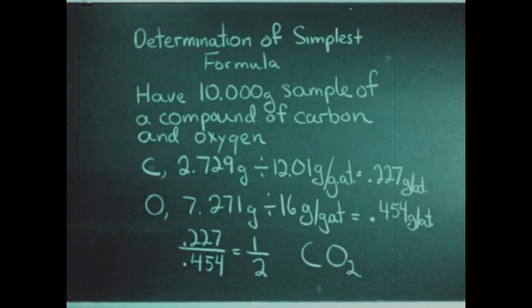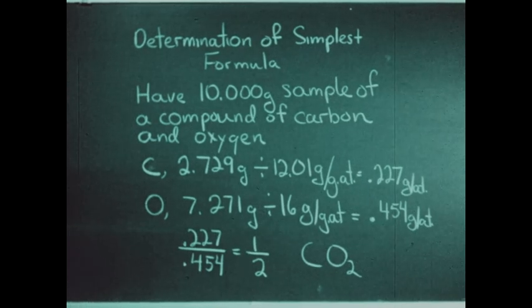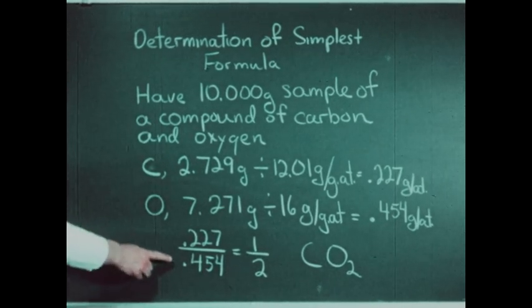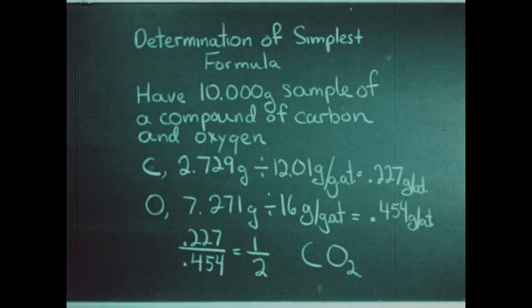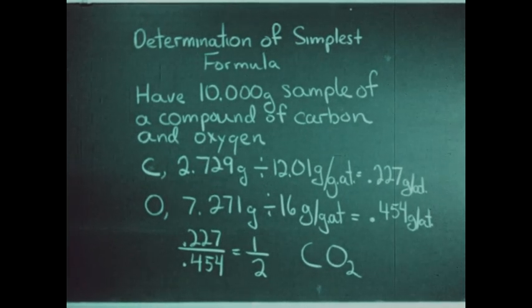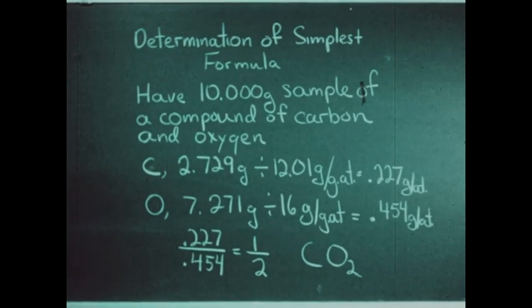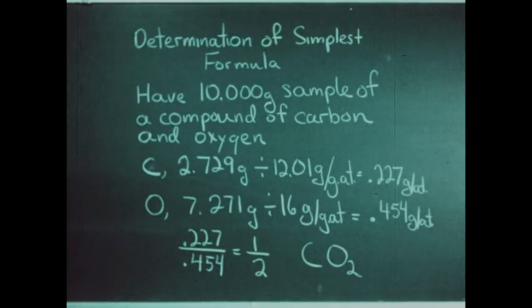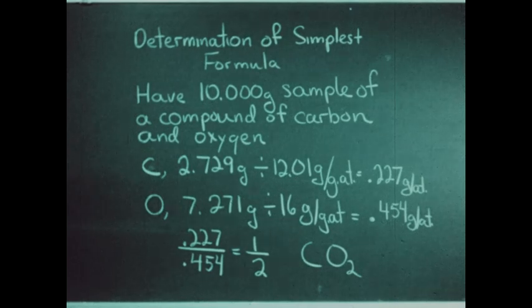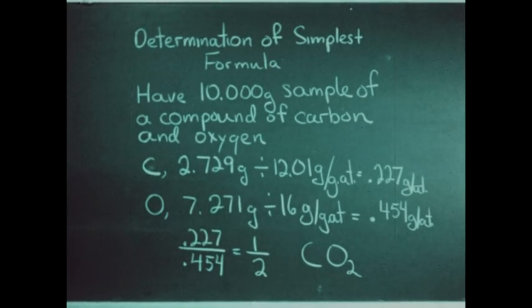Similarly, we have 0.454 gram atoms of oxygen. Now, 0.227 and 0.454 are obviously in a ratio of one to two. This tells us that the simplest formula for this compound of carbon and oxygen is CO₂, which indicates that one atom of carbon combines with two atoms of oxygen.